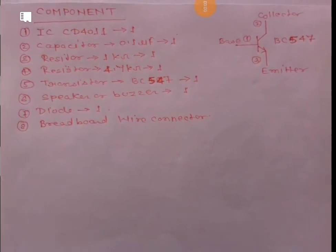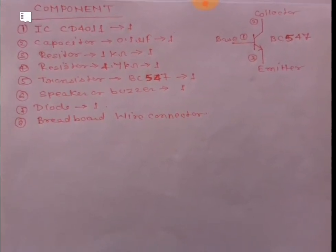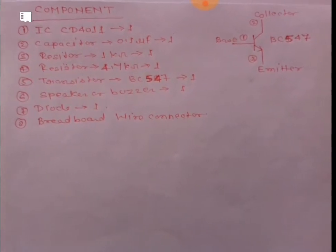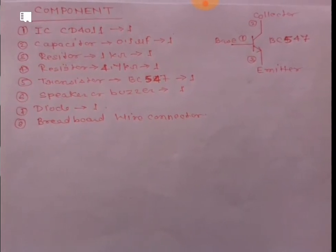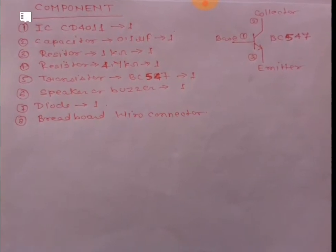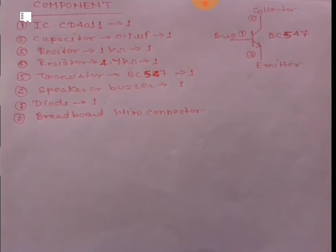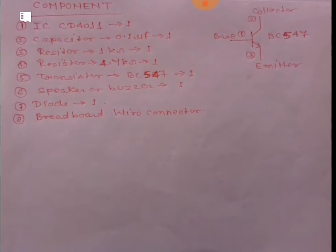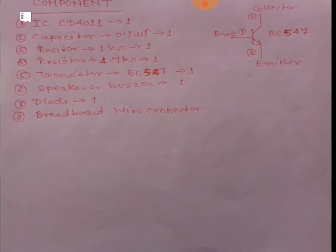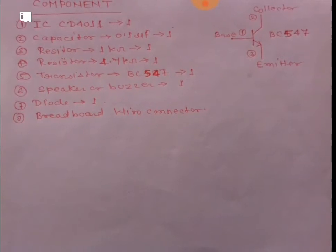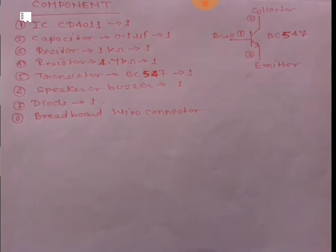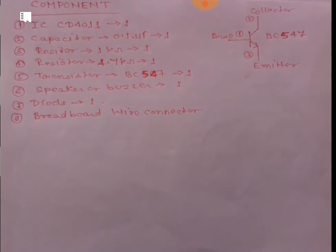In the luggage security alarm, we need some components: IC CD4011, one 0.1 microfarad capacitor, one 1 kilo ohm resistor, one 4.7 kilo ohm resistor, one transistor BC547, one speaker, one diode, a breadboard, and wire connectors.